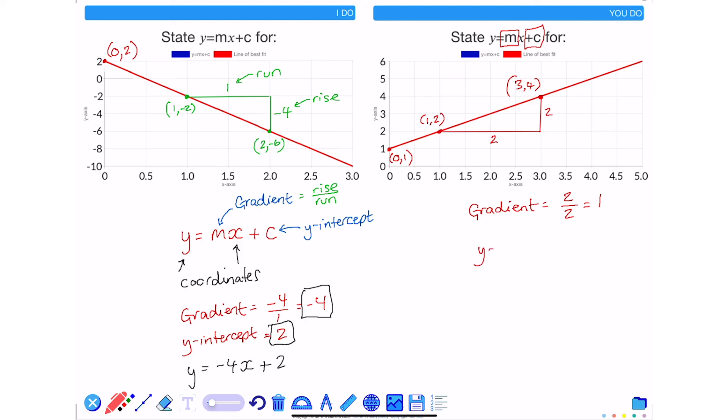I already know that my y-intercept is also 1. So y is equal to the gradient, which is 1x plus 1, which was the y-intercept. This is the equation of my straight line.